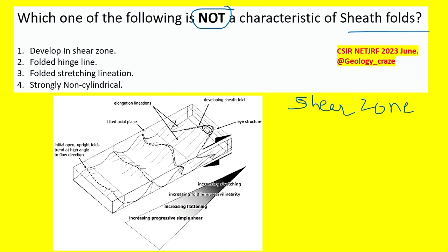In the beginning, the folds that are present within the shear zone are open or upright folds oriented at high angle to flow direction. With the progressive simple shear, the geometry of the fold changes and it converts into sheath fold. This is the picture of sheath fold.